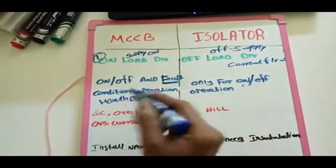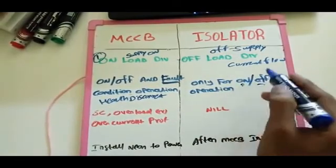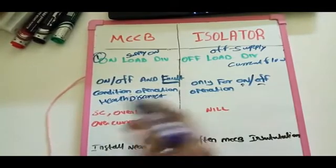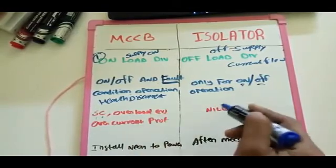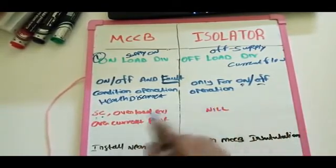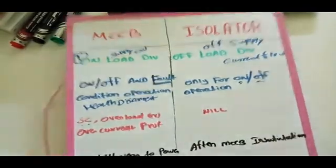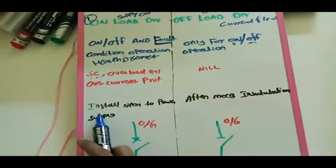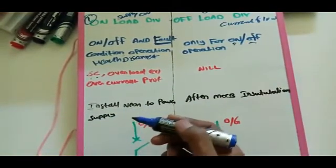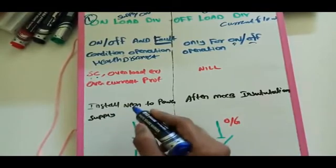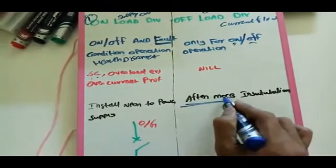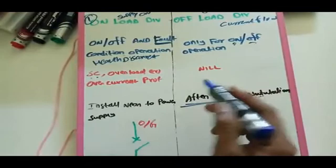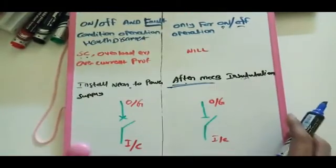The Isolator only has switch on and switch off operations. Short circuit current protection, overload, and overcurrent protections are available in MCCBs but not in the Isolator, because the Isolator acts only as a switch. The MCCB should be installed first because it provides protection to the circuit. The Isolator is installed after the MCCB, as the MCCB is the primary switching and protection device.